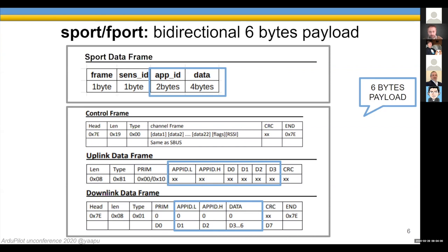The receiver polls information about every 12 milliseconds and the flight controller has to detect this polling and respond. In F-Port, the master is the radio, which sends a control frame followed by an uplink data frame at around 100 Hz, and the flight controller has to respond by sending a downlink data frame. Both protocols share a six-byte payload, which is all we have to transfer information back and forth. This is important — we'll see why in a while.